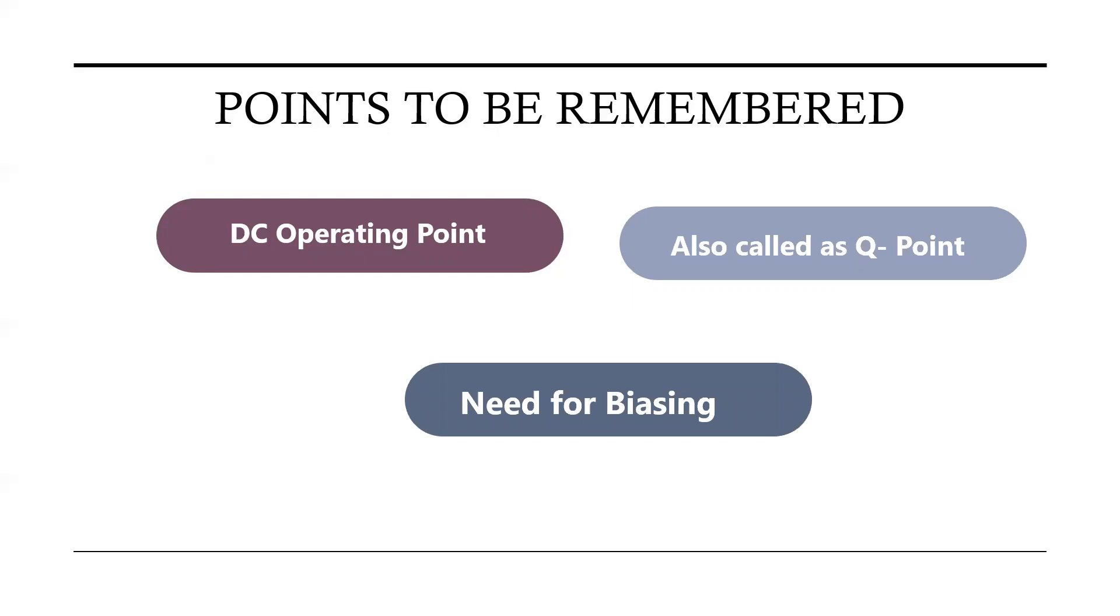Now let us have a small discussion on need for the bias. Very first point: for the operation of transistor in the desired region, and also the DC sources which are supplying power to the transistor circuit to get output signal power greater than that of the input signal power. It has to be satisfied if the transistor is not biased properly.